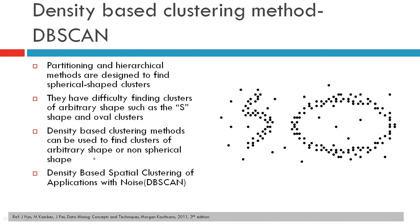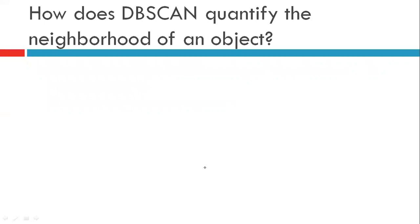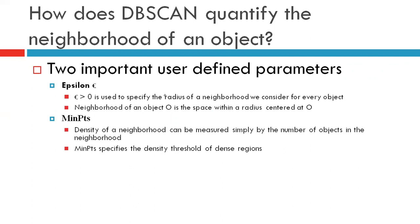We have referred to this particular book for DB scan method. The problem here is to find out the dense region. We will be finding out the density of any object or sample point O by finding out how many more sample points are near to this object. There are two important terms: the first is epsilon, which is the radius defining the neighborhood of sample point O. The second is min points — how many objects are there in the vicinity of radius epsilon surrounding object O. These are user-defined parameters.